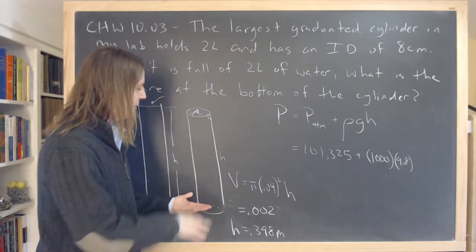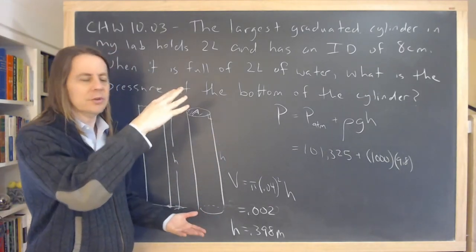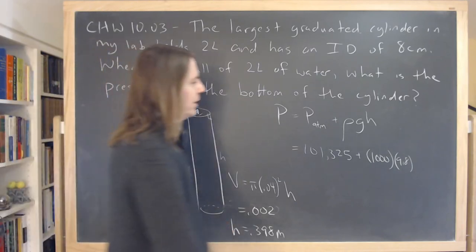And as a reality check, is that about how tall a 2 liter cylinder is? Yes, it's about that tall. So 0.398 right here.